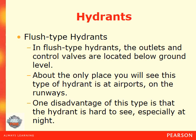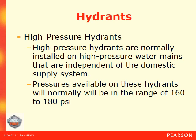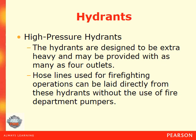In flush type hydrants, the outlets and control valves are located below ground level. About the only place you will see this type of hydrant is at airports on the runway. One disadvantage is that the hydrant is hard to see, especially at night. High pressure hydrants are normally installed on high pressure water mains that are independent of the domestic supply system; pressures on these hydrants will normally range between 160 and 180 PSI. These hydrants are designed to be extra heavy and may have as many as four outlets. Hose lines for firefighting can be laid directly to these hydrants without fire department pumpers to boost the pressure.